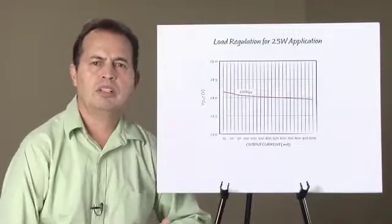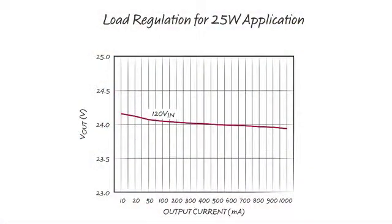This plot shows typical load regulation results for the same 25 watt application with voltage regulation. Load regulation is better than plus or minus 1%. For lighting applications that require TRIAC dimming, Linear Technology also has a video feature on the LT3799.